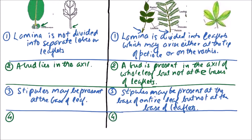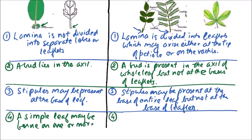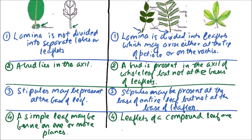Simple leaves may be borne in one or more planes — we have already studied this in various types of phyllotaxy — but the leaflets of a compound leaf are borne in the same plane.